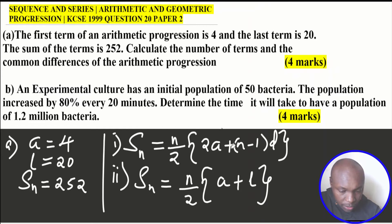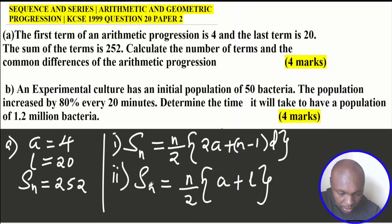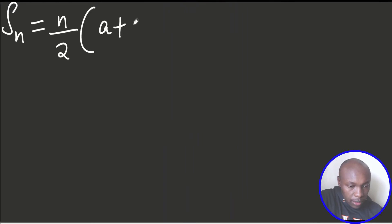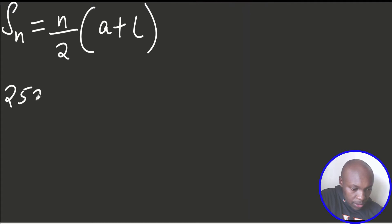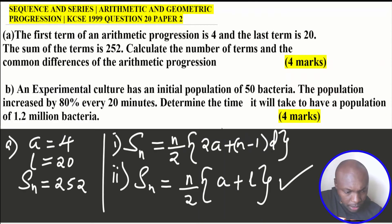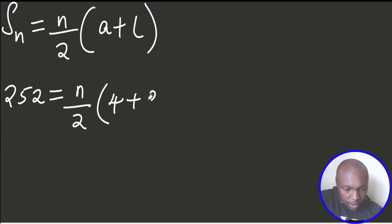Looking at the first formula, a is given as 4, but n and d are both unknown — that gives two unknowns. In the second formula, SN is known, a = 4, and l = 20, so this is the correct formula to use. Therefore: SN = n/2 × (a + l), giving 252 = n/2 × (4 + 20).